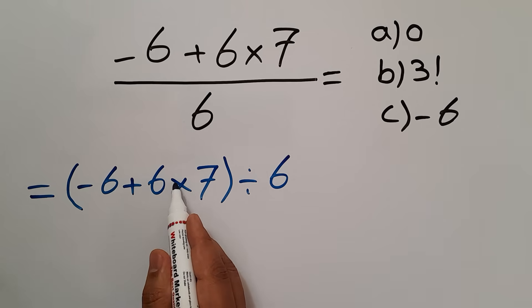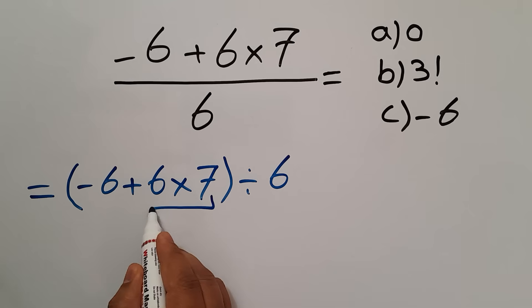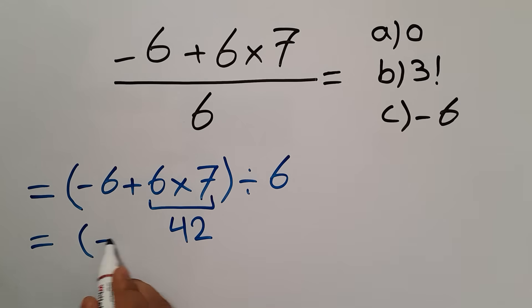So first, we have to do this multiplication. 6 times 7 equals 42. So we have parentheses, negative 6 plus 42 divided by 6.